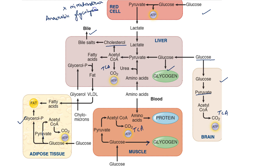As a result, pyruvate forms lactate with the help of lactate dehydrogenase, which enters the liver to be again converted back to pyruvate. This is called the Cori cycle and is important for anaerobic metabolism in skeletal muscle.